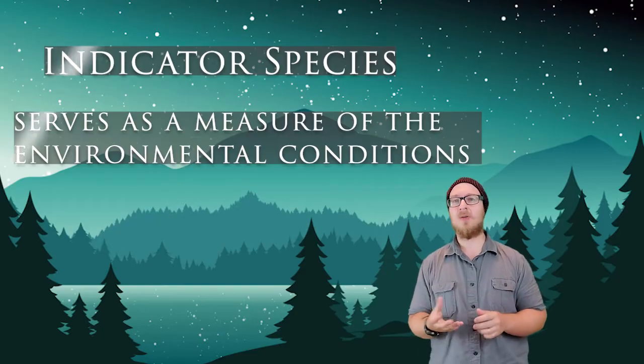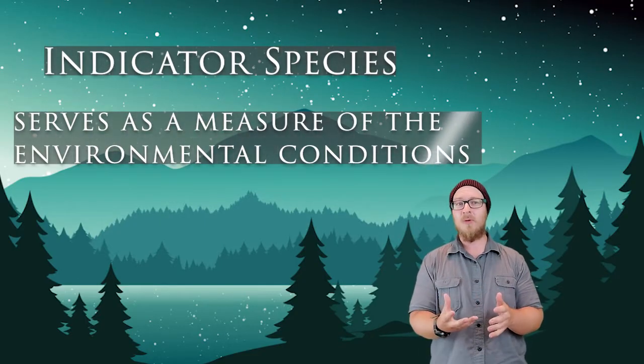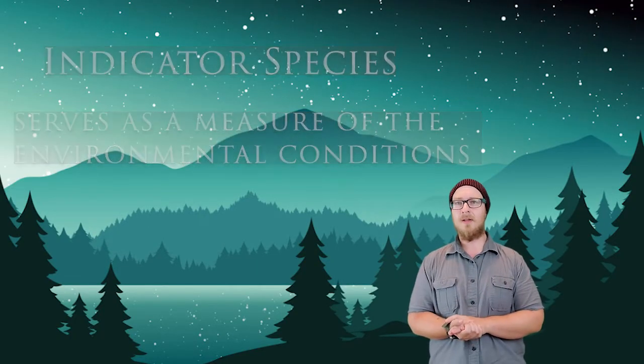One more species concept you should be familiar with is an indicator species. When studying the health of an ecosystem, there are particular species a scientist would look for to get a quick idea of the health and quality of an area. Species with a narrow ecological tolerance curve are useful to scientists because they are intolerant to polluted or degraded ecosystems.